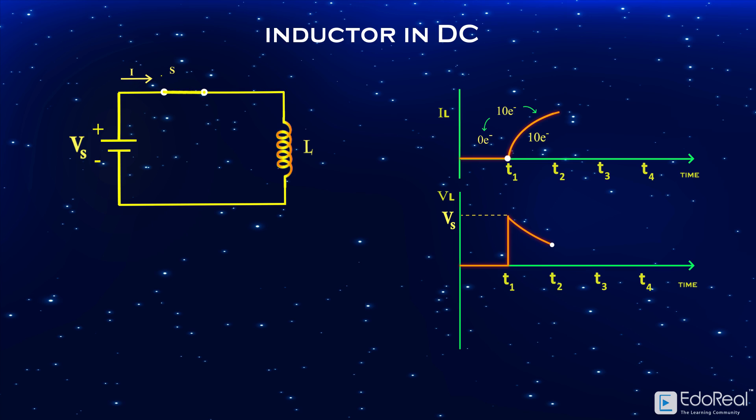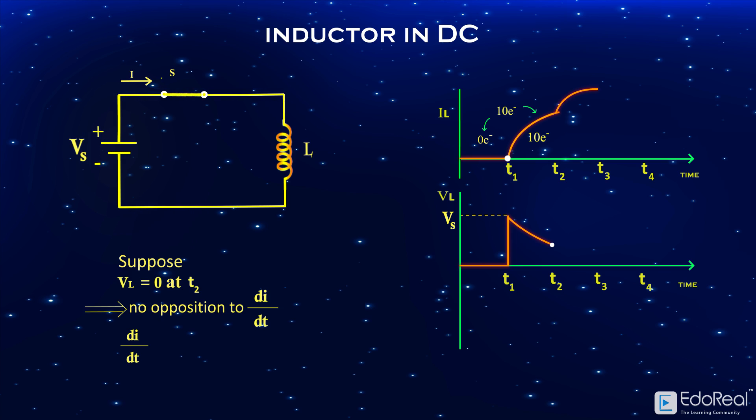Between time t2 and t3, as there is induced voltage at time t2, the rate at which current rises decreases. Let us suppose there is no induced voltage at t2. It implies no opposition to change in current. Then the current rise in the time span t2 to t3 should be equal to the current rise in previous time span t1 to t2, that is, 10 electrons.